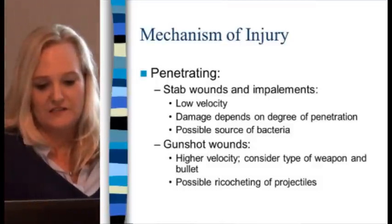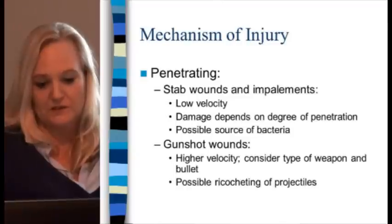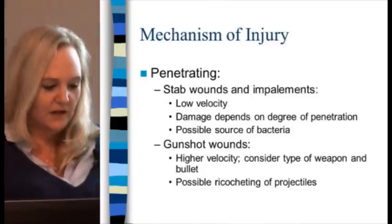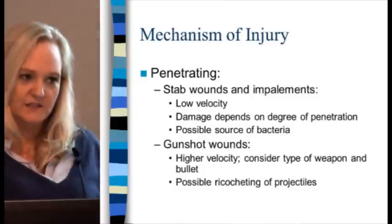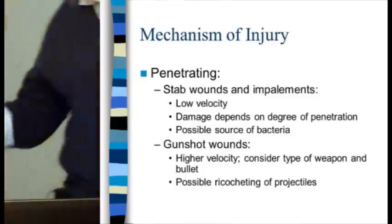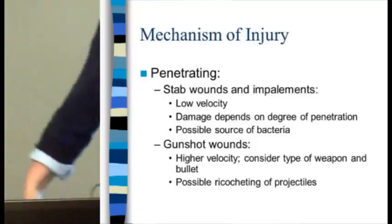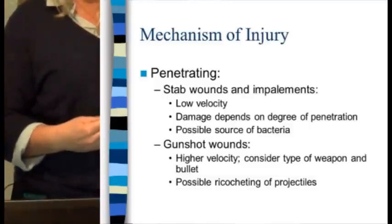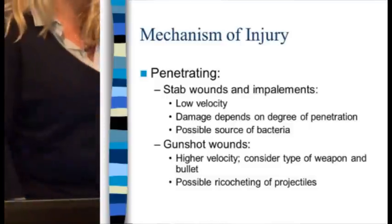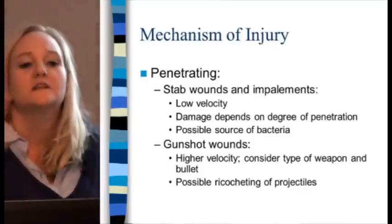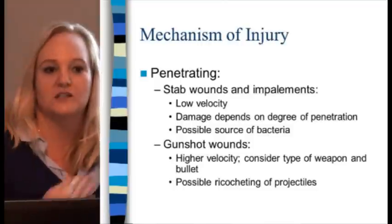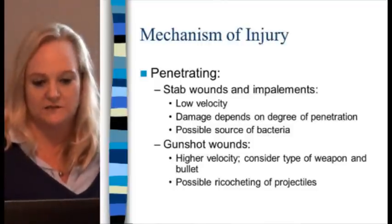Gunshot wounds are higher velocity. We consider the type of weapon, bullet, and possible ricocheting projectiles. I had one case where somebody shot through a car window — the bullet bounced off the baseboard, entered here, but ended up in the liver. We didn't discover that until the OR because of low blood pressure. Bullets can ricochet anywhere; you may think it's just in the thigh, but it's not.